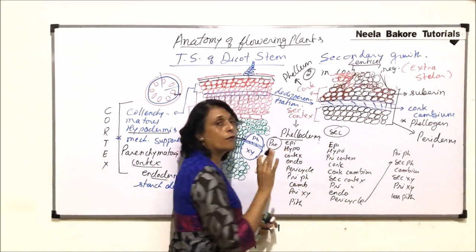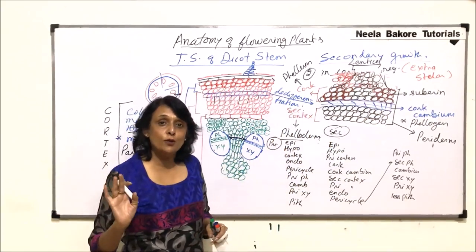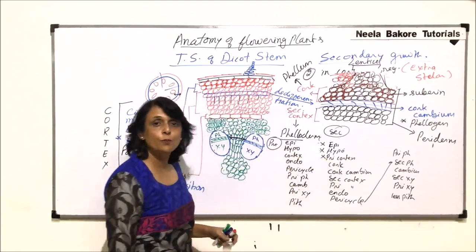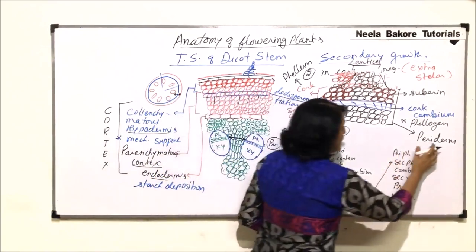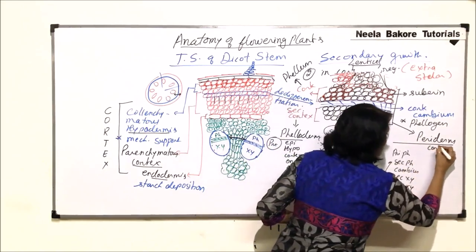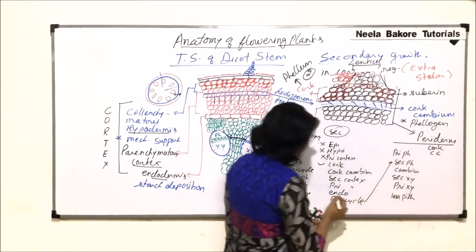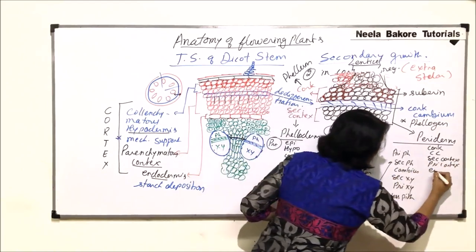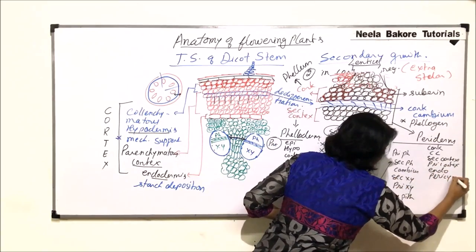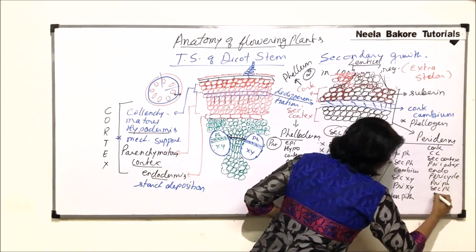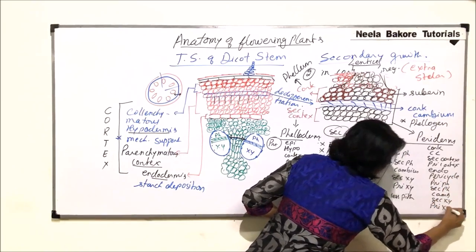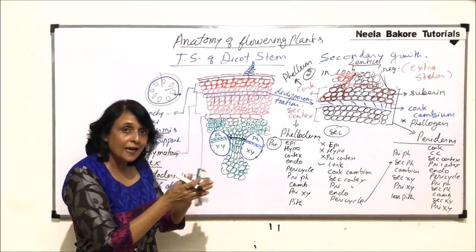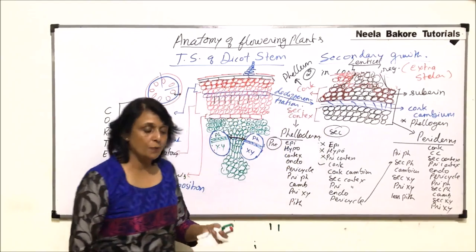If secondary growth takes place for a very long period of time, epidermis would be gone, hypodermis would be gone, and the primary cortex will also be gone. The outermost layer is going to be cork. If secondary growth continues for a long period, the sequence becomes: cork, cork cambium, secondary cortex, primary cortex, endodermis, pericycle, primary phloem, secondary phloem, cambium, secondary xylem, and primary xylem — with no pith, because it gets crushed by the primary xylem moving in, and the outer parts are also lost due to cork formation.